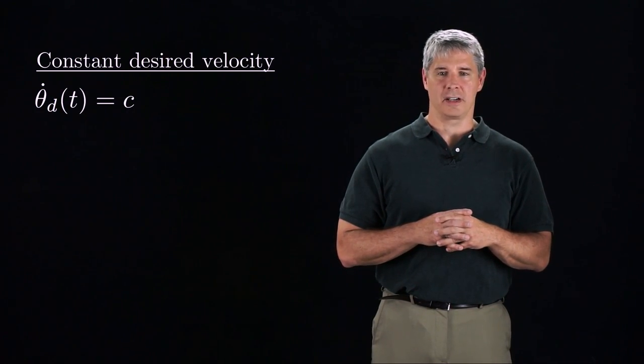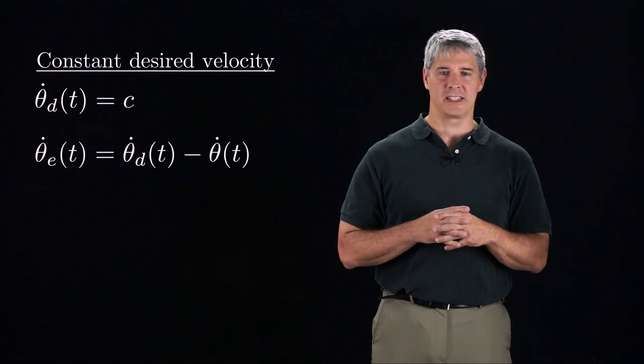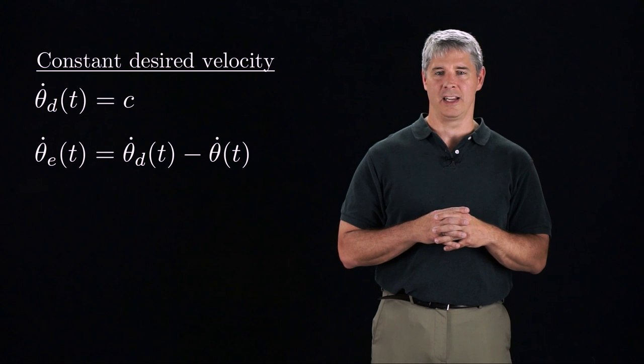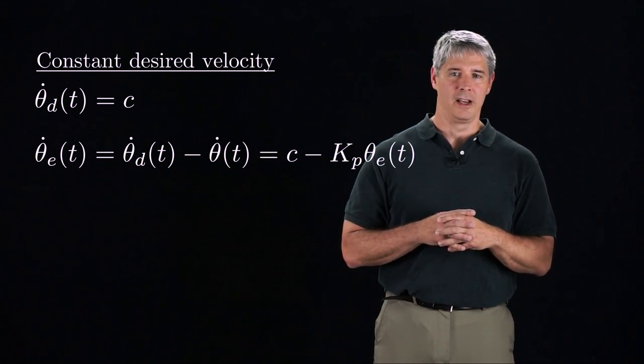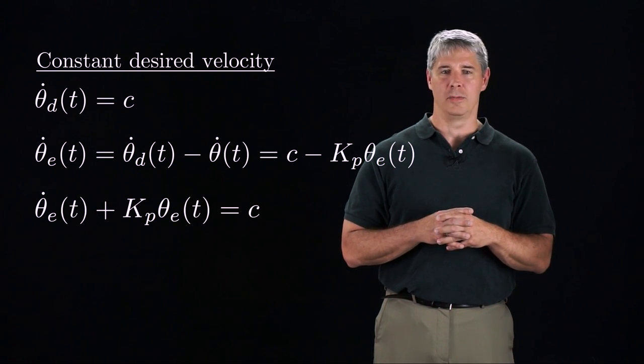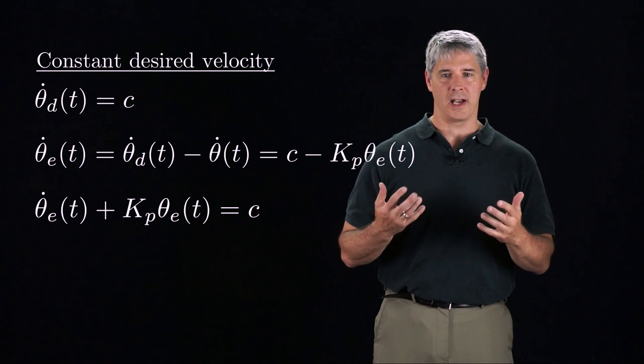Now assume the desired trajectory has a constant velocity. Then the rate of change of the error can be expressed as theta d dot minus theta dot, and plugging in c for theta d dot and the P-controller for theta dot, we get this first-order non-homogeneous differential equation.